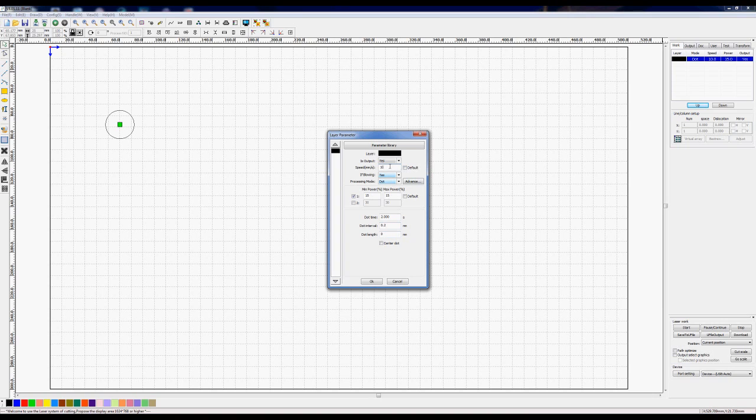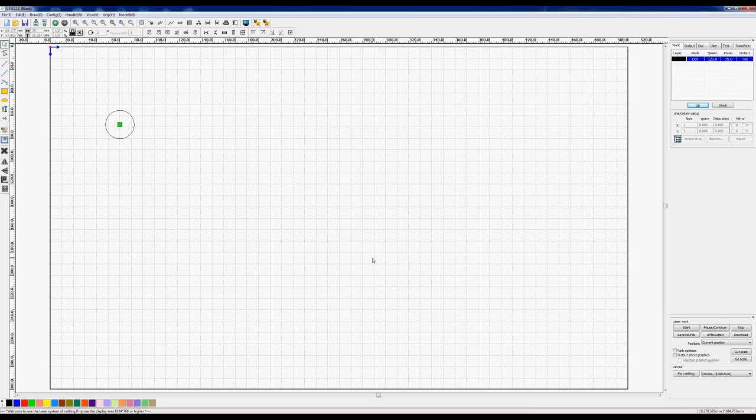If I put the speed in at 120, it won't make any difference because the dotting is controlled by the time that the pulse is on and the distance that it moves. So we save this and we'll go out to the machine.